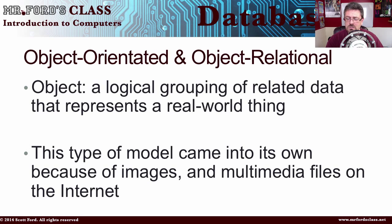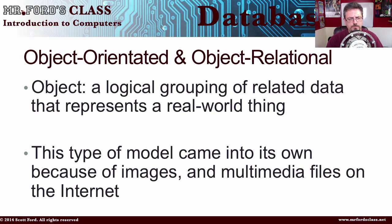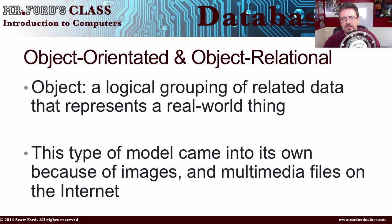This type of model came into its own because of images and multimedia files on the internet. Before the internet really came about, databases were all text-based. Now with the internet we have to search and index things like images and videos. For example, if you found this video via YouTube search, you're having to index videos just like you used to index text. There's a lot more different things now that we have to add to a database than just plain text, and we're seeing an increase in the ability of the internet world to index and classify objects that wouldn't have been possible before.